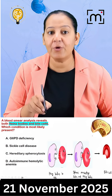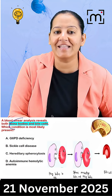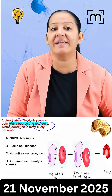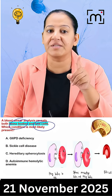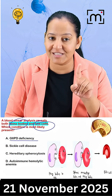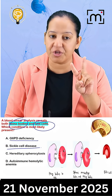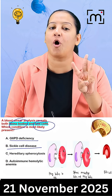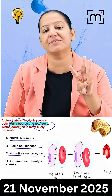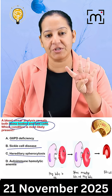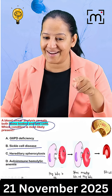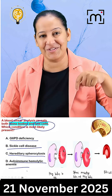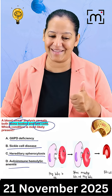Can you tell me in which anemia Heinz bodies and bite cells are seen? Your options are: Option A — G6PD deficiency, Option B — sickle cell anemia, Option C — hereditary spherocytosis, and Option D — autoimmune hemolytic anemia. If you know the correct answer, please post it in the comments below. Thank you.